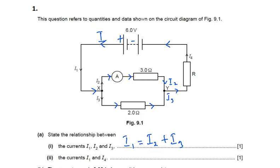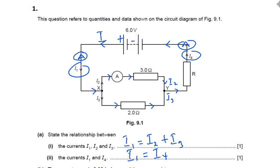For the second relationship, between i1 and i4: i1 and i4 are both in a series connection. If you place an ammeter at any point in this series section, you get the same reading, because in a series connection the current is the same across all components. Therefore i1 = i4.